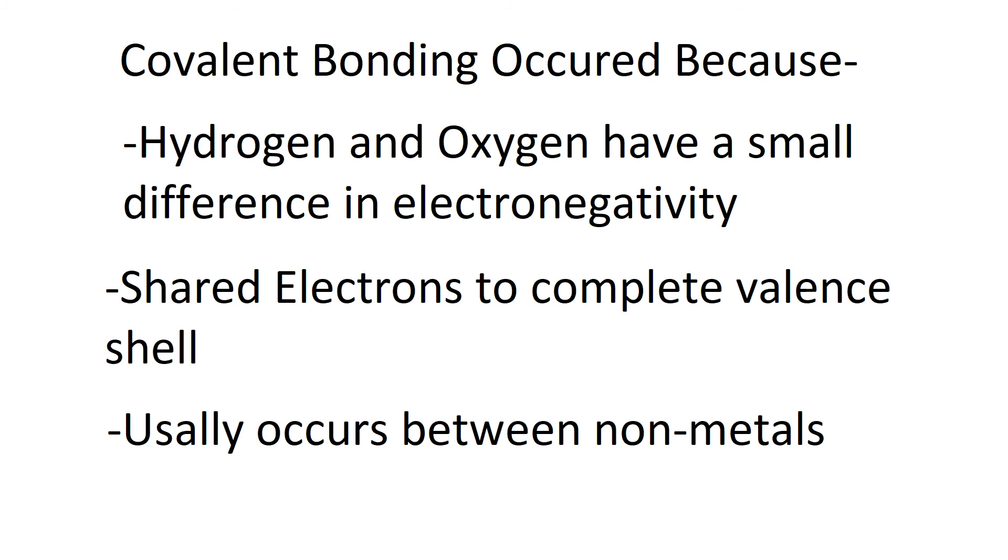Finally, I want to end with why covalent bonding is happening and occurring in this situation. So hydrogen and oxygen have small differences in electronegativity. That's the first one, because if they had a big difference it would either be a polar covalent bond or it would be an ionic bond. The electron would just be stripped away, it wouldn't be shared electrons.